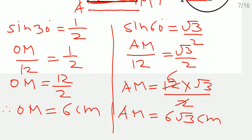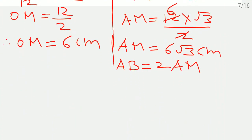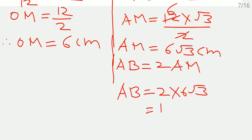AB is double of AM, so AB equals 2 times AM equals 2 times 6 root 3, which comes as 12 root 3 centimeter. We now have the base AB and the height OM, so we can find the area of the triangle. Area of the segment equals area of sector minus area of triangle.